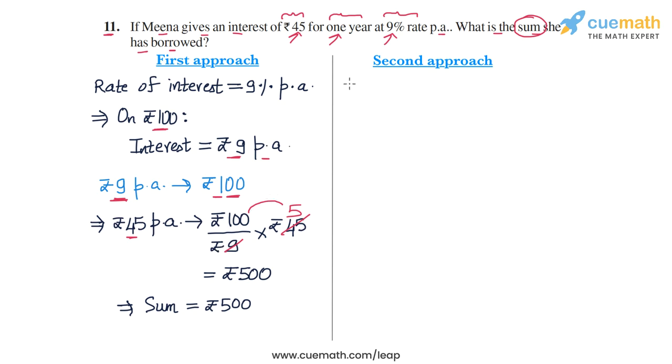Let's start by assuming that the principal amount is some variable, let's say rupees P. Now we know that the formula to calculate simple interest is principal into rate of interest into time by 100. We will plug in the values into this formula that we have.